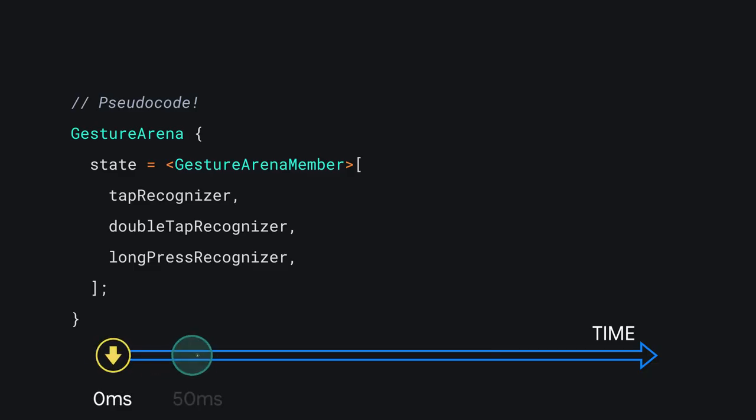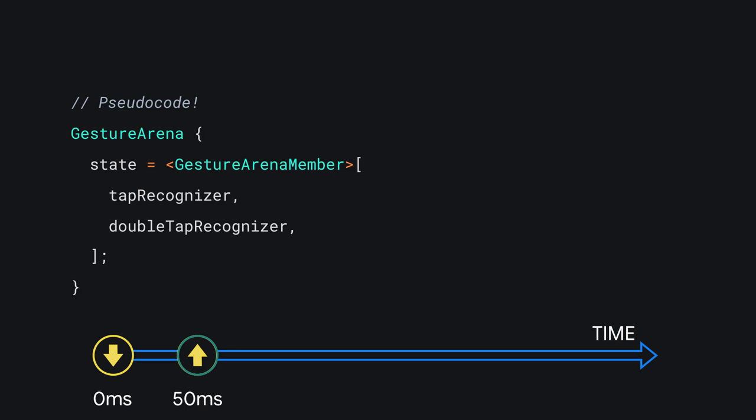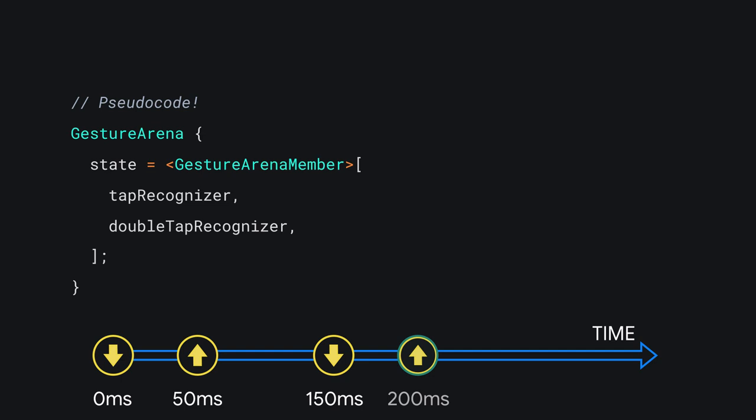For one more scenario, imagine that same set of gesture arena combatants, but this time there's a second pointer down event at 150 milliseconds and a pointer up event at 200 milliseconds. In this scenario, the double tap recognizer sees its chance, declares victory, and escapes the arena victorious — its onDoubleTap handler is called immediately, and everyone else misses out. By the way, user interaction events bubble up your widget tree, with descendant gesture detector widgets taking precedence. The first gesture detector to rule the arena wins, meaning if your gesture detector has a parent gesture detector that implements the same listeners, the child's recognizers will always win.